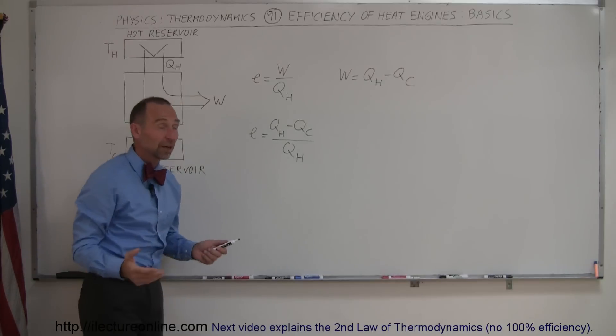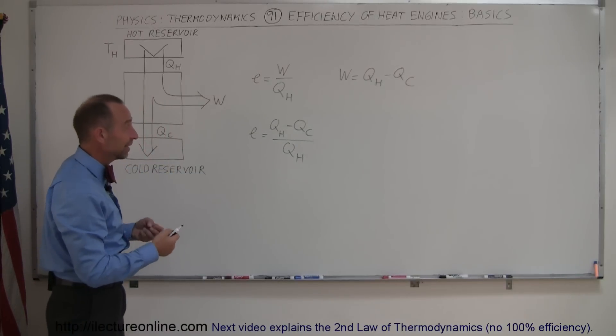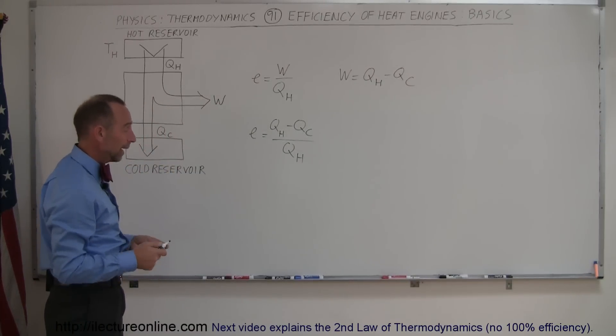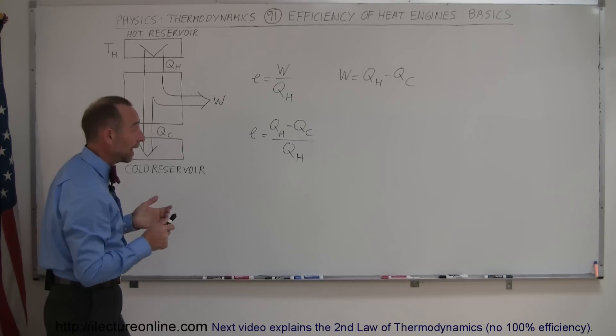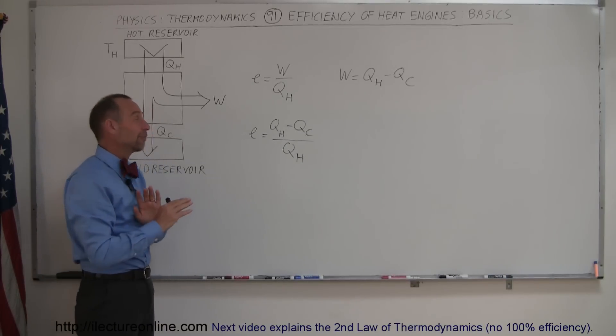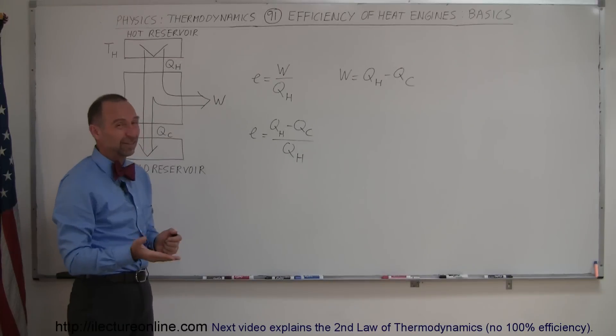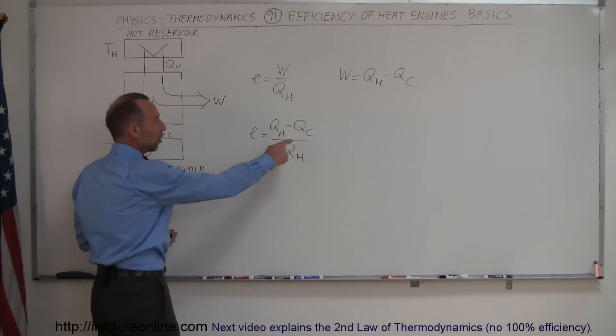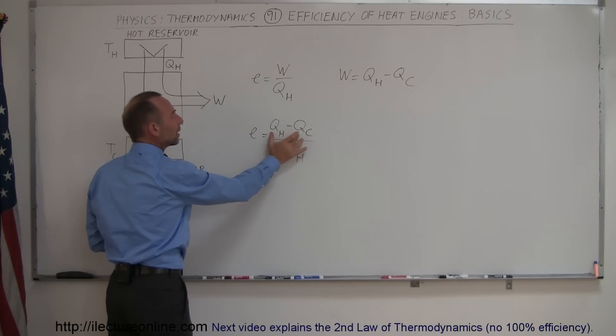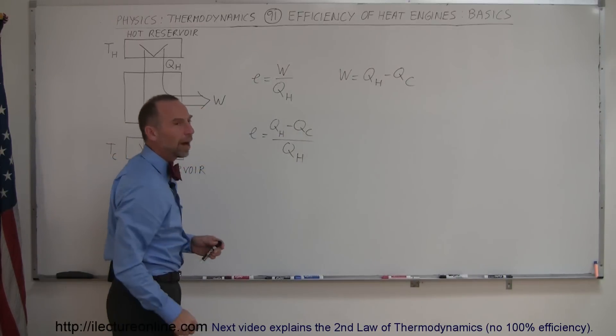And, of course, you can realize that efficiency can never be greater than 1, and as we will learn later in thermodynamics, with the second law of thermodynamics, that the efficiency can actually never be equal to 100%. It always has to be less than 1. In other words, Qc is never 0, so this quantity right here will always be less than Qh.